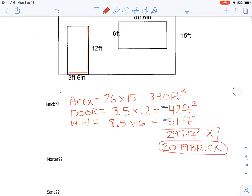Now for bags of mortar, the rule of thumb for brick is that for every 125 brick you will need another bag. So we're going to take our number of brick and divide it by 125.